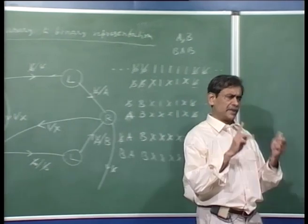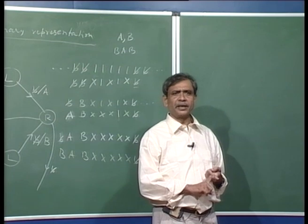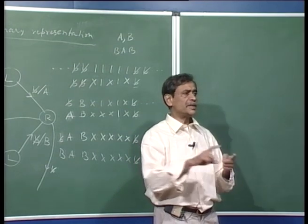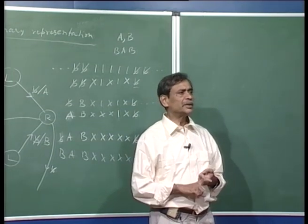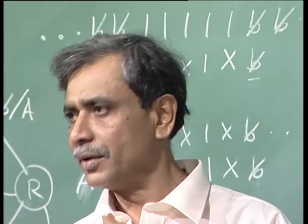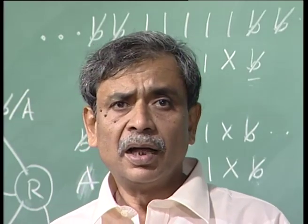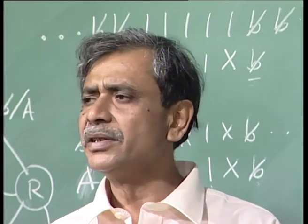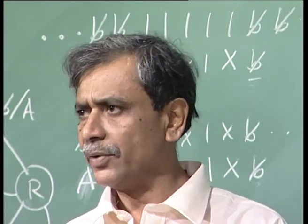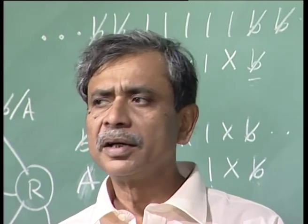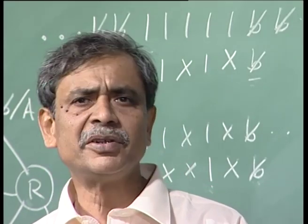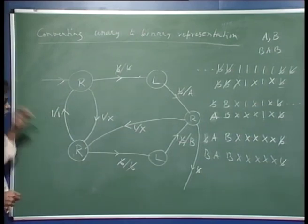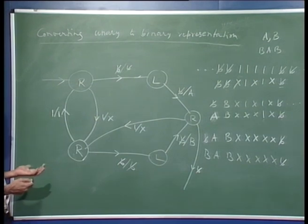We have seen now at least two examples of Turing machines, both doing fairly interesting tasks. The first example was checking whether a string of A's, B's and C's had equal number of A's, B's and C's, and the second one was converting unary representation of a number into its binary representation. But in this particular course of theory of computation, our focus is not so much on computing functions, but our focus has been to recognize languages.